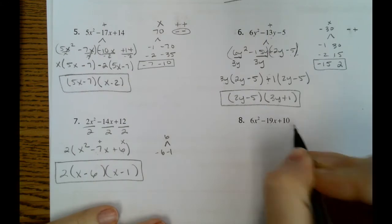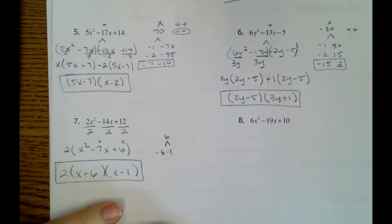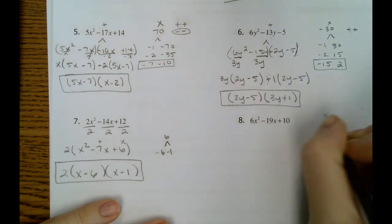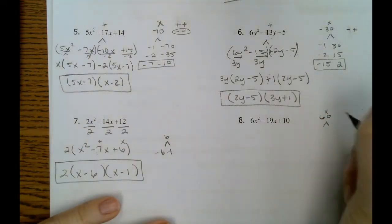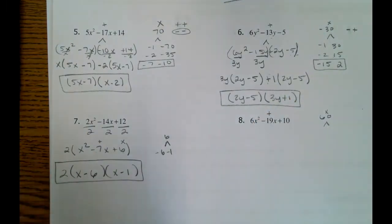Number 8. 6, 19, and 10. Those only have 1 in common, so we don't have any other GCF here. So we're going to multiply our outside numbers. 6 and 10 get us 60. So we're multiplying to 60 and adding to negative 19.